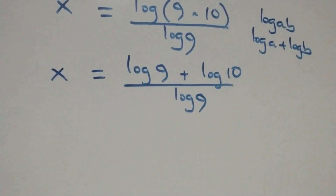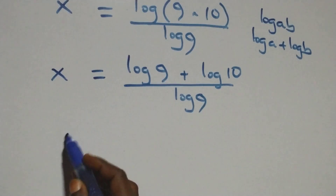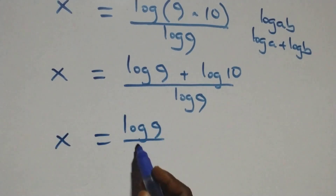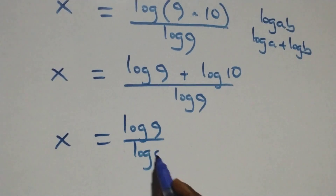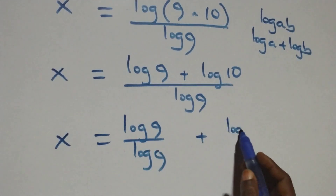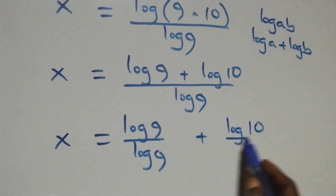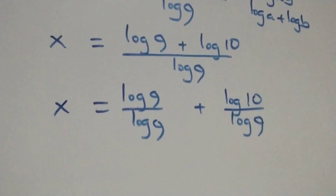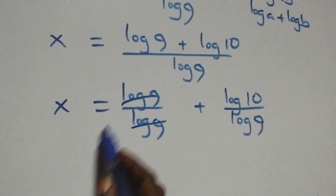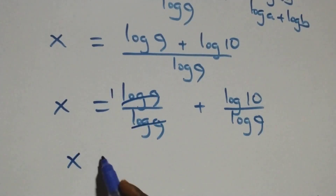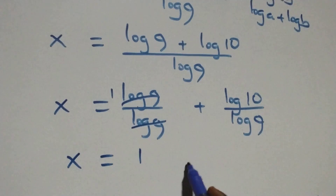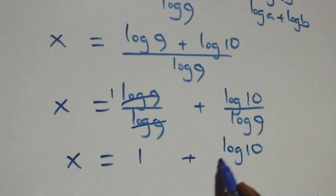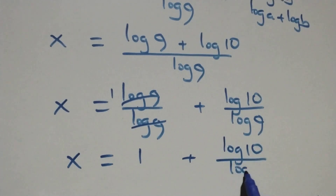Then here we separate this into two fractions and we have x equals to log 9 over log 9 plus log 10 over log 9. Here log 9 cancels each other, leaving one, which implies x equals to 1 plus log 10 over log 9.